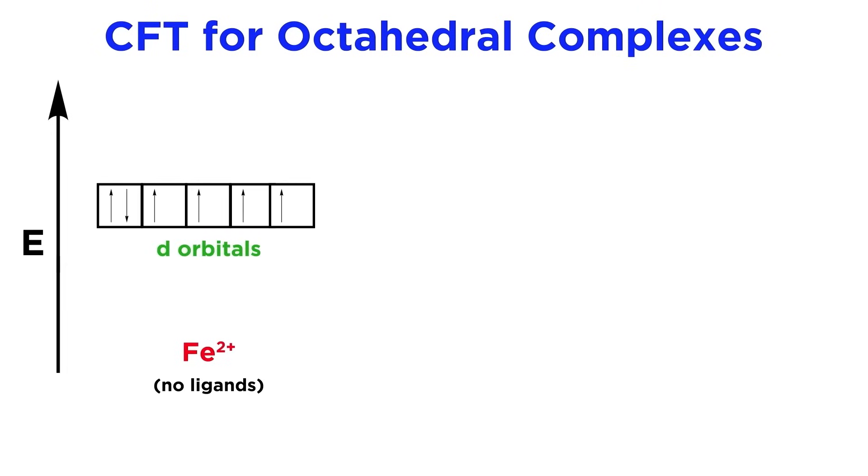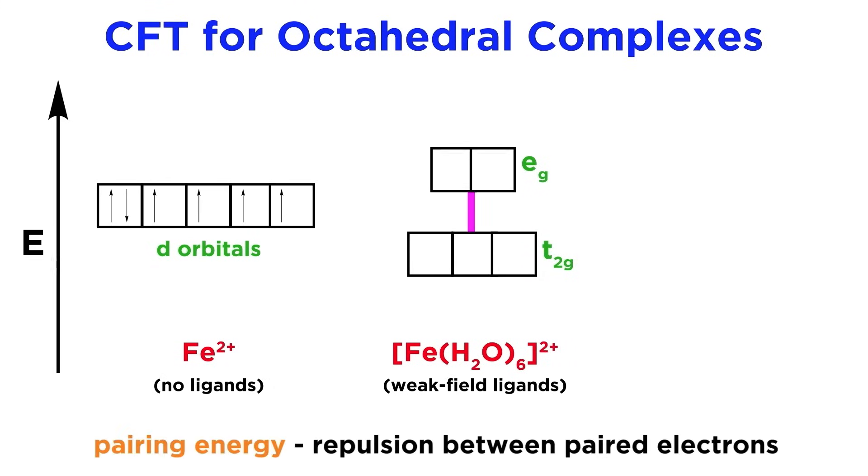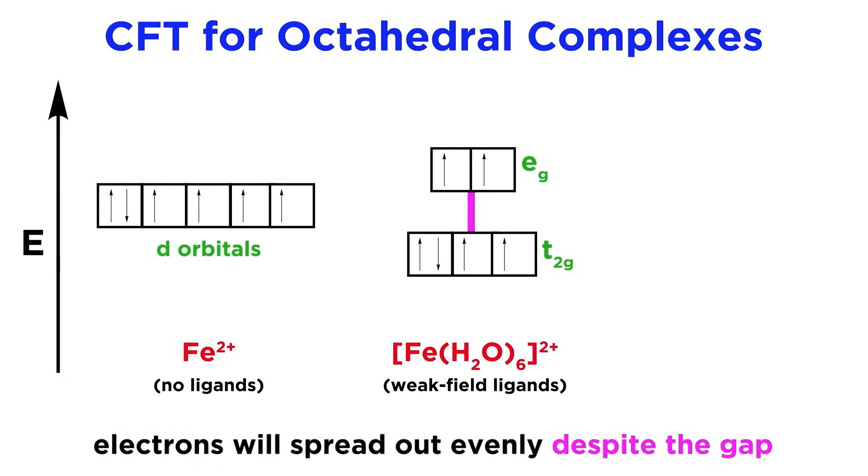For an isolated metal atom, once again all the orbitals are of equal energy. If the metal is participating in a complex with weak field ligands, the difference in energy is small and not enough to overcome the pairing energy, or the repulsion generated by doubling up electrons in an orbital. In such a case, they will spread out evenly, putting unpaired electrons in the eg orbitals before the t2g orbitals are completely full. These are called high spin complexes.